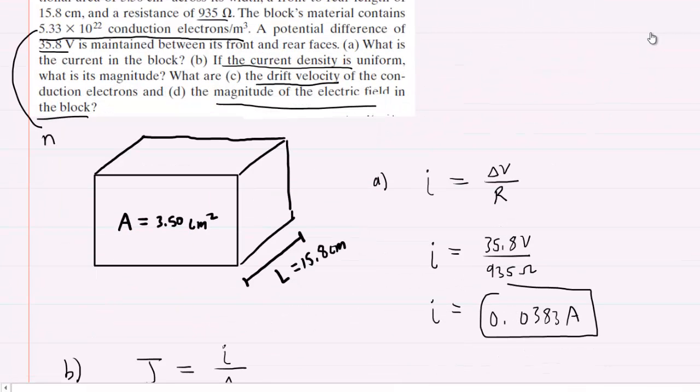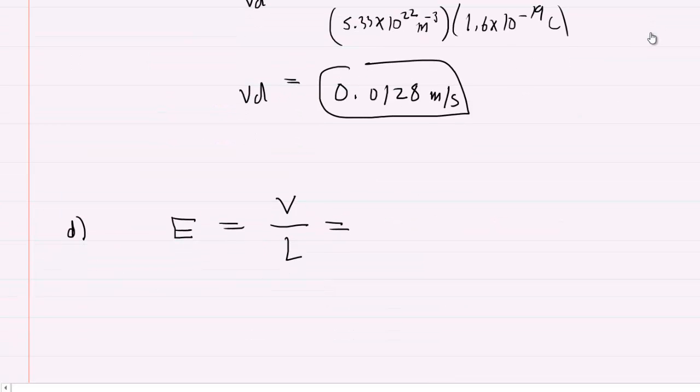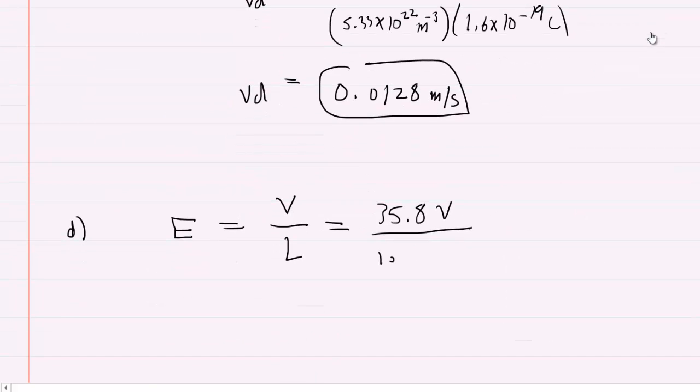The potential difference across the block was 35.8 volts, and the length is 15.8 centimeters. We'll have to convert that into meters. So we'll have 35.8 volts divided by that length, which is 15.8 centimeters.